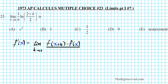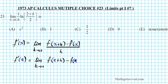This form finds the derivative at any point x. Now what if we want to define the derivative at any point a? F prime of a is going to be the limit as h approaches 0 of f of a plus h minus f of a divided by h. This is the limit definition of a derivative at a point a. There's another variation of this, but let's just focus on this one for this problem.